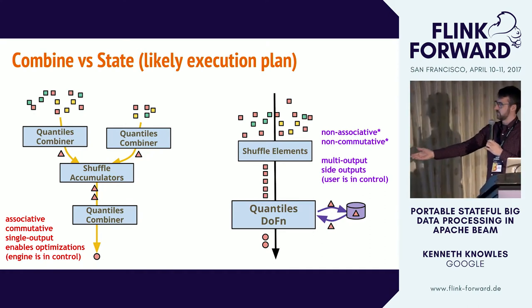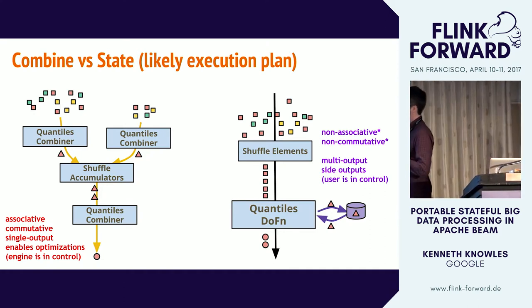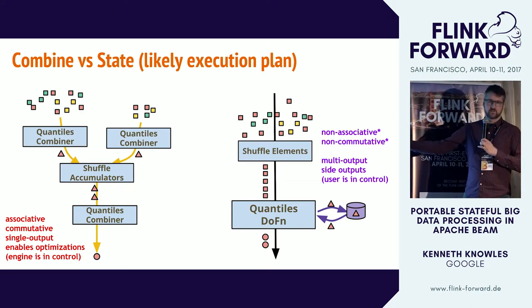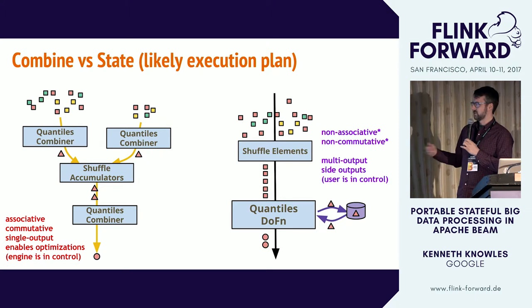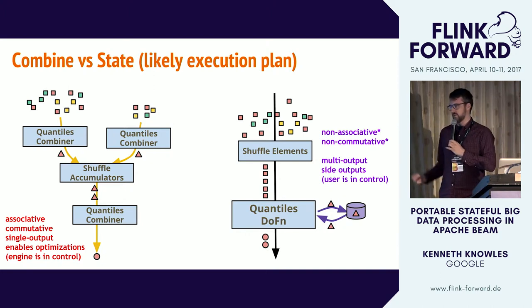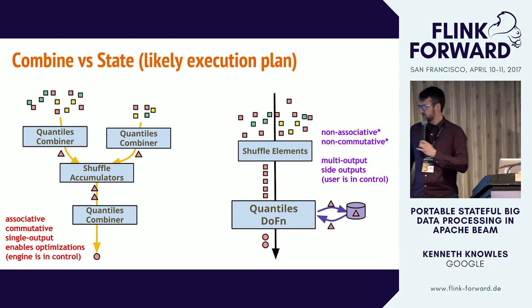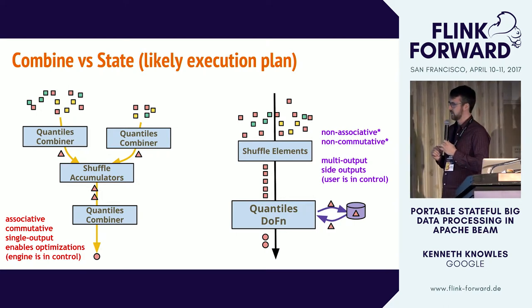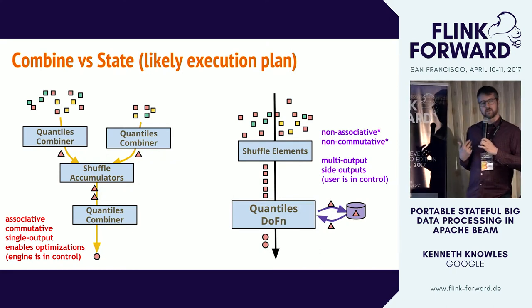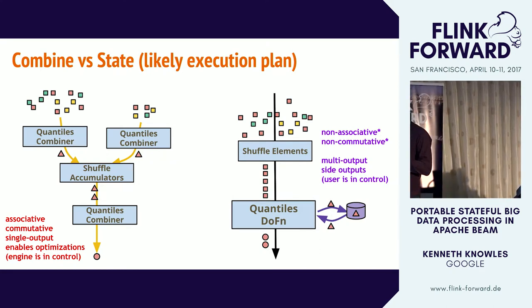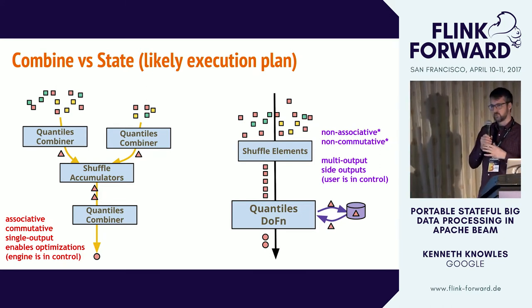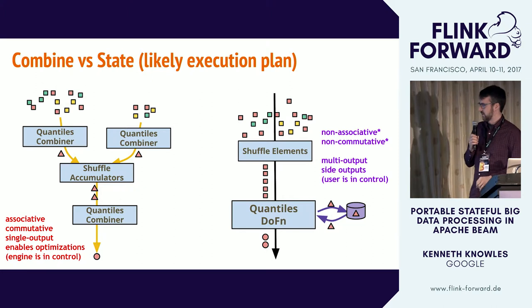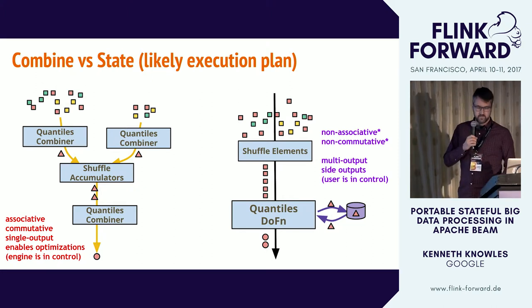Whereas if you write this stateful per-key-and-window operator, the data comes out of order — that's just the nature of data from your source. So you've got a stateful operator that's not necessarily associative or commutative, and you're going to shuffle all of your elements in order to feed them one at a time to this DoFn. The trade-off is you can do things that are non-associative and non-commutative. And writing something in straight-line code makes it very straightforward to add features like side outputs and side inputs, giving you fine-grained control over when and how many times you output.